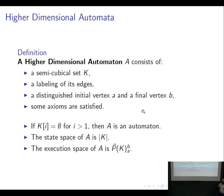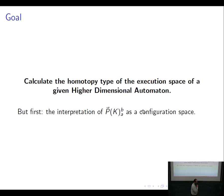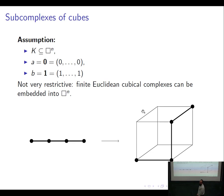My goal will be to calculate the homotopy type of the execution space of any given higher dimensional automaton. I will have some more assumptions about this higher dimensional automaton. But first, before I do anything, I will give an interpretation of this execution space as a configuration space. I need to assume that my cubical set can be embedded somehow in the cube. It's not very restrictive because every Euclidean complex can be embedded into a single cube, since a sequence of succeeding intervals can be embedded into a cube.